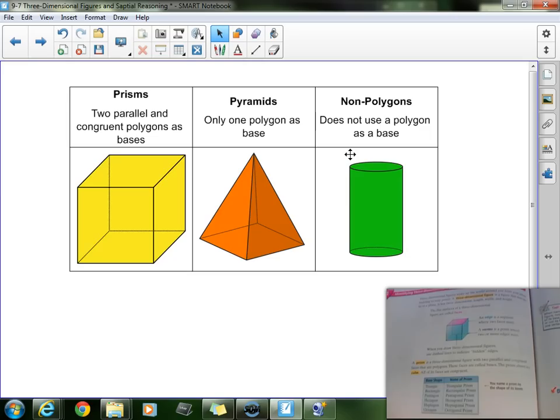Now we are going to be breaking all three-dimensional figures into one of three groups, and you can see those three groups on the board right there. The first one we're going to talk about is prisms, and they do an excellent job of describing prisms here at the bottom of page 462.